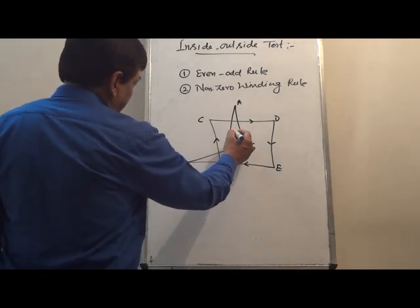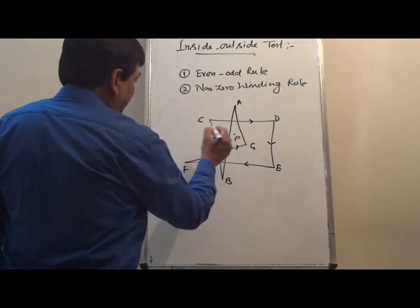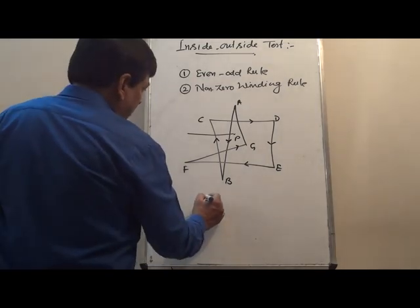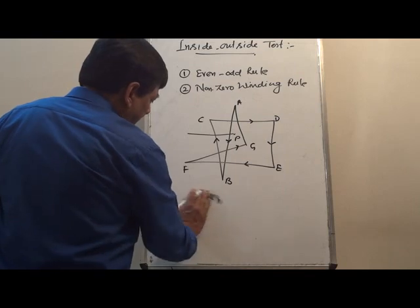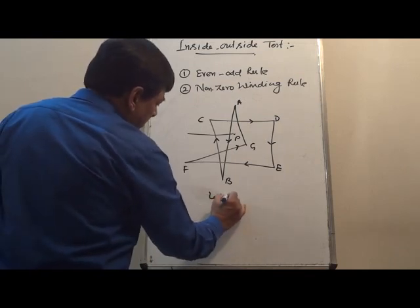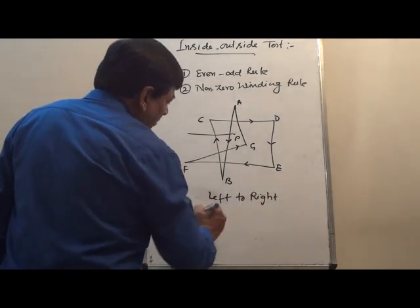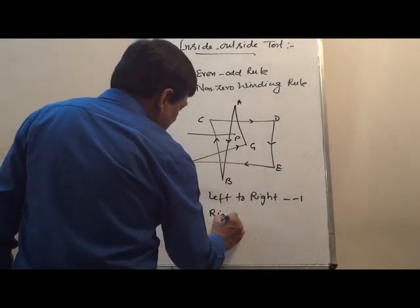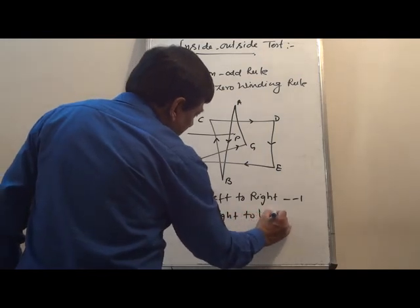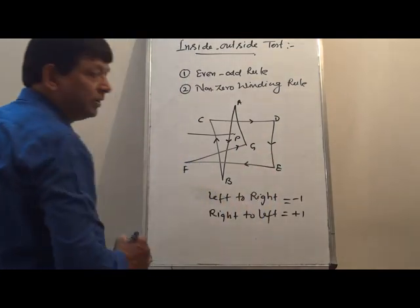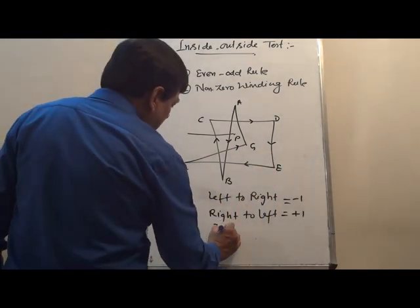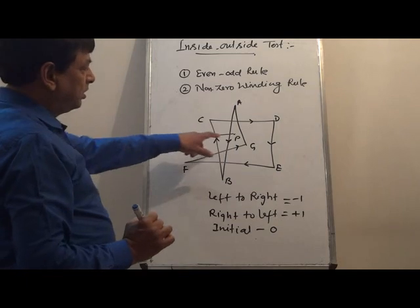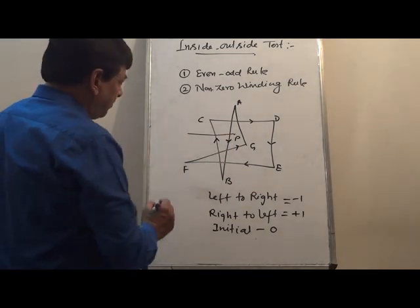Suppose I take point P — this is the scan line. When the crossing is left to right, we give the number minus 1. When the crossing is right to left, we give the number plus 1. Initially we give the number 0.